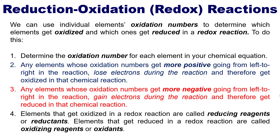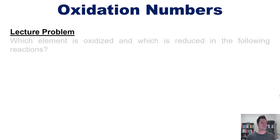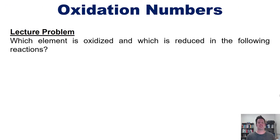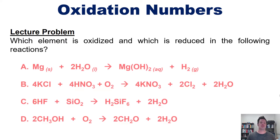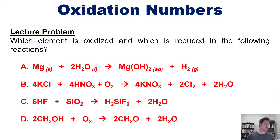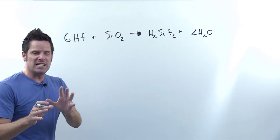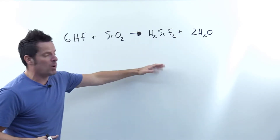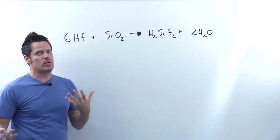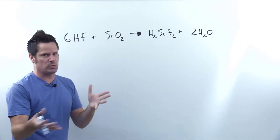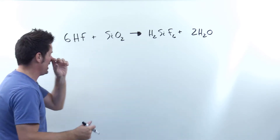Let's show how to do that with an example problem: which element is oxidized and which is reduced in the following reactions? I won't do all of them, but I'll do one or two on the board and then invite you to attempt the rest on your own. Let's start by identifying the oxidation state of everything on the board, because that's what we need to determine what gets oxidized and what gets reduced.